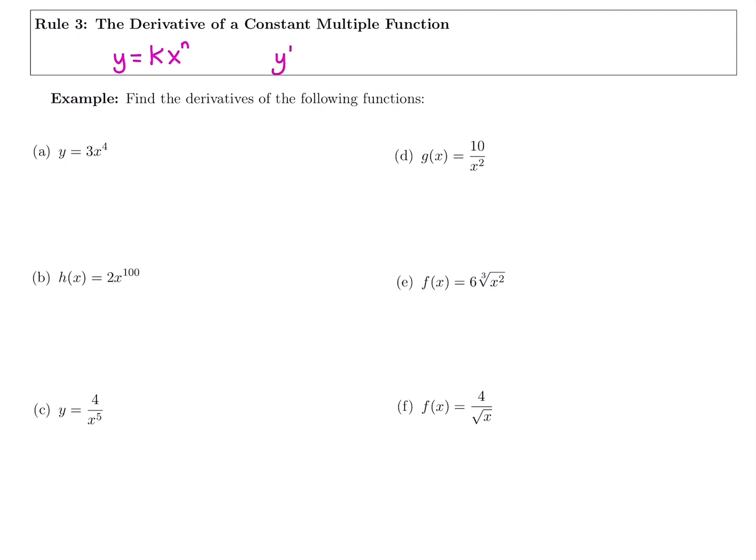When you take that derivative, y prime, you would keep that constant, but you would take the derivative normally. You'd still just bring down that power and subtract one for the new power in this case. So why I call it a do-nothing rule is because it doesn't do anything. We're going to keep our constant multiples and then take the derivatives normally.